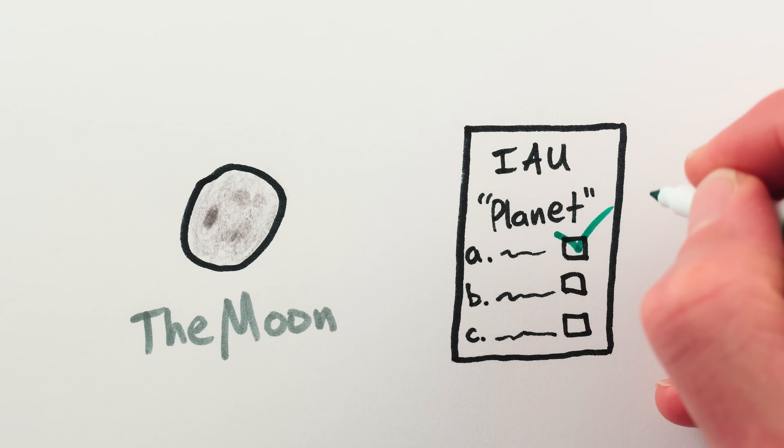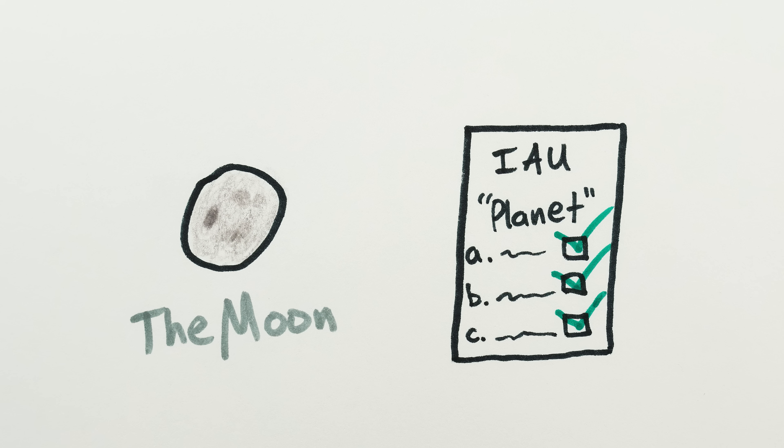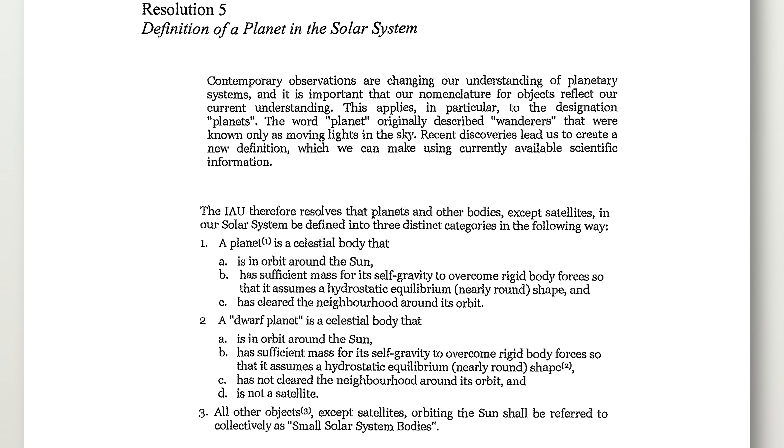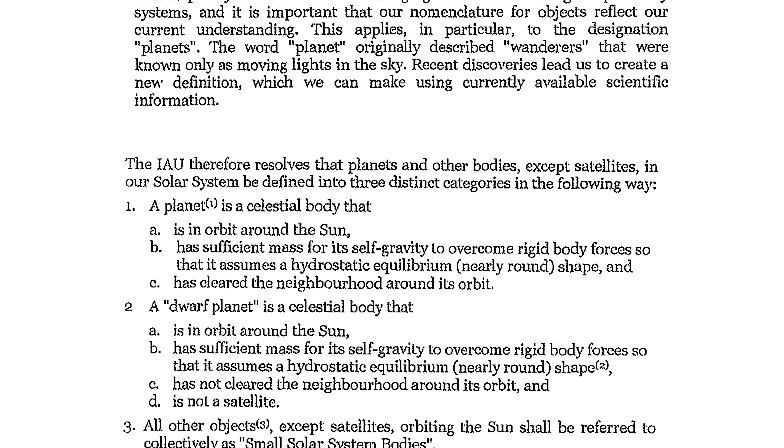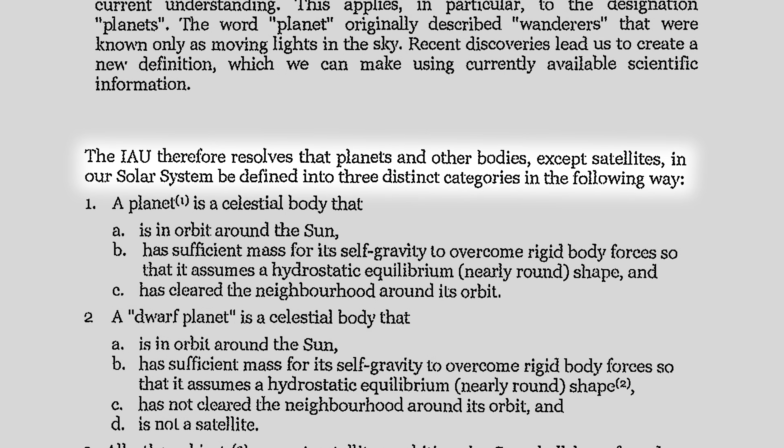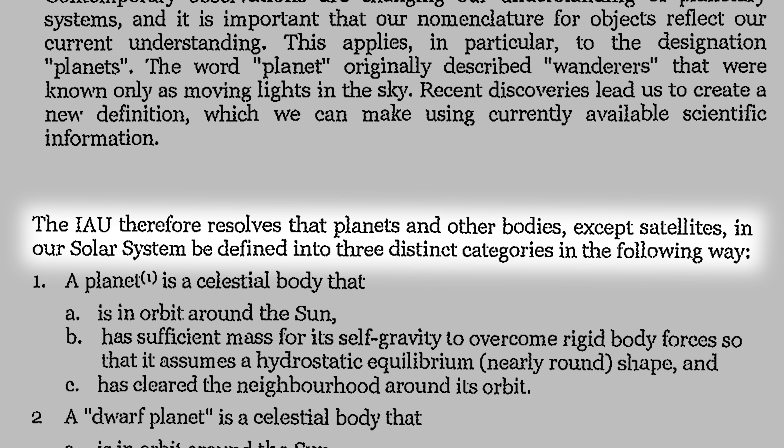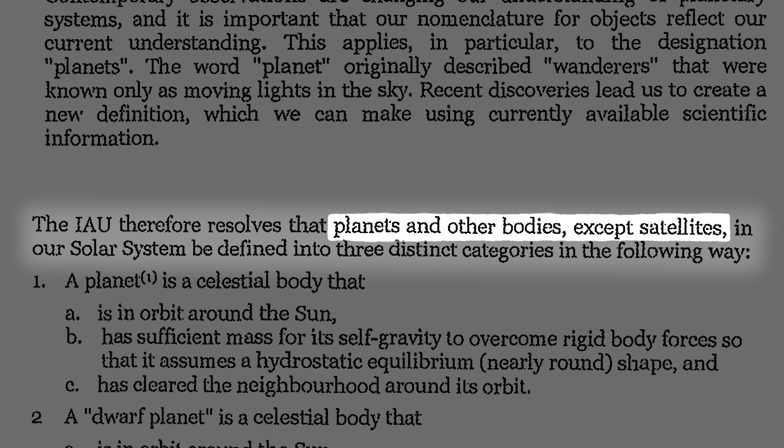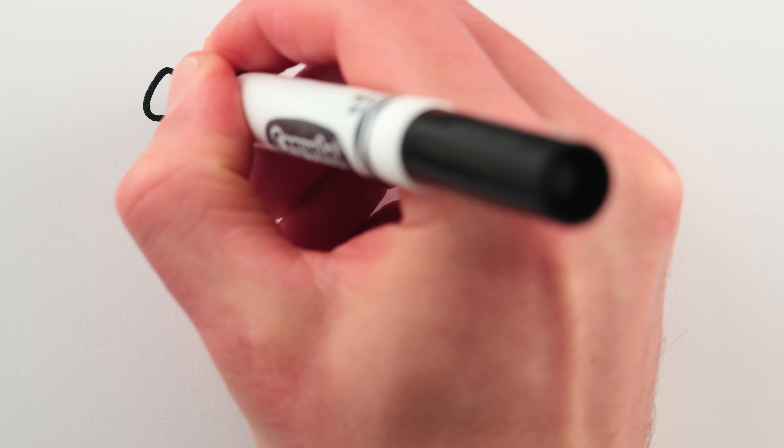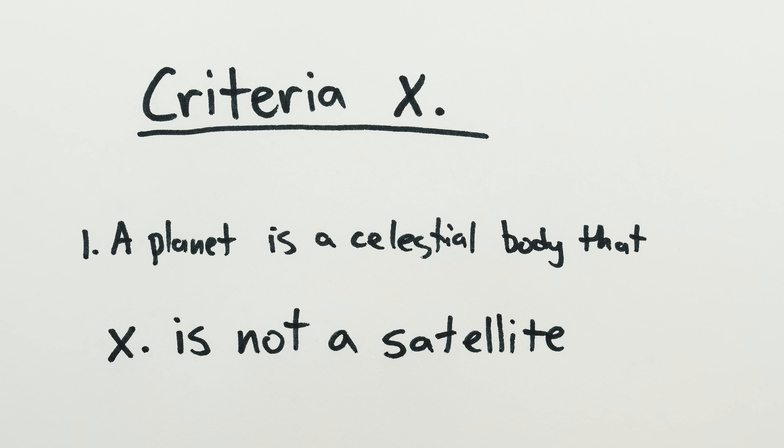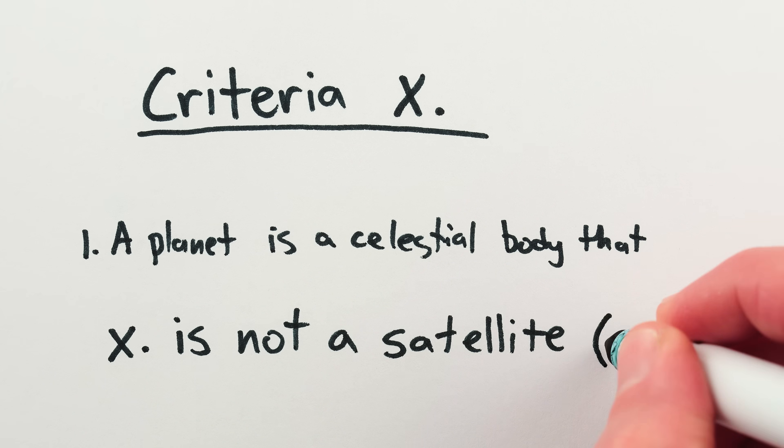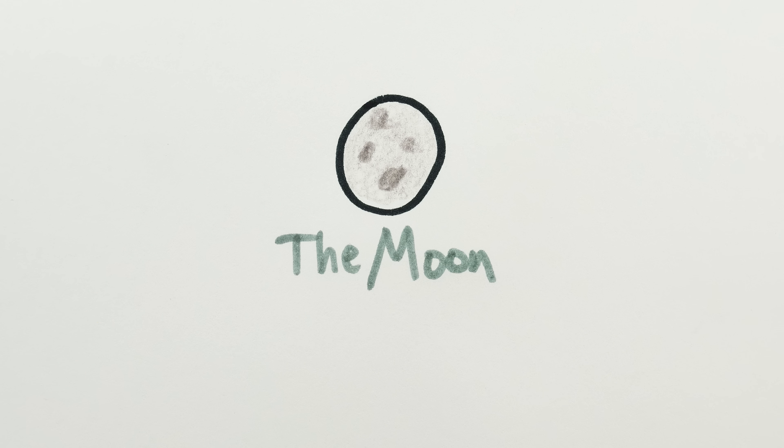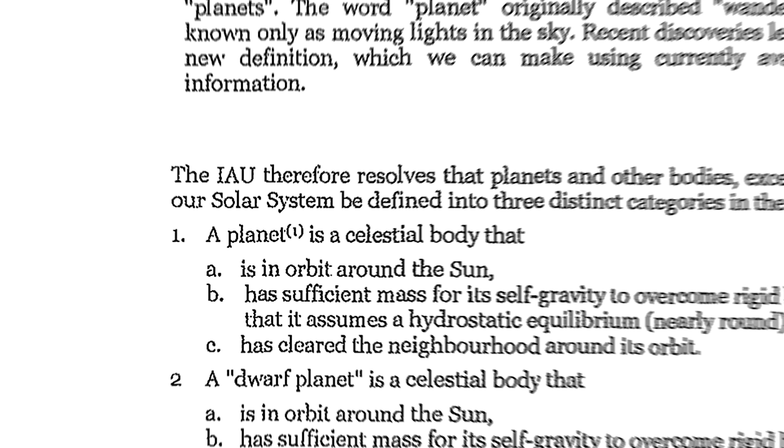Anyway, the Moon ticks all three of the IAU's planet boxes. Why then, you might ask, why doesn't the IAU celebrate the Moon as a planet? Look closer at their definition of a planet and you'll get your answer. There are two more hidden criteria. Just before the three primary criteria, we see that the IAU definition applies to planets and other bodies, except satellites. I'm calling this Criteria X, because the IAU didn't label it. Criteria X: The object must not be a satellite of another object. That is, not a moon. Oh, I guess that explains it. The Moon is, after all, a moon.